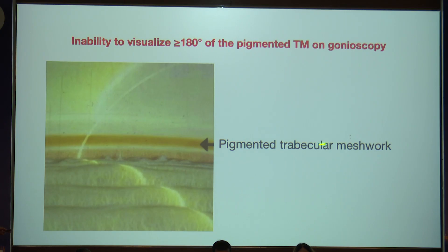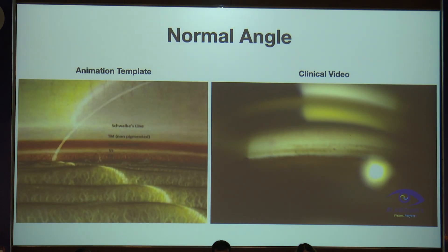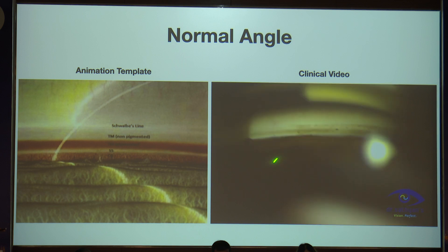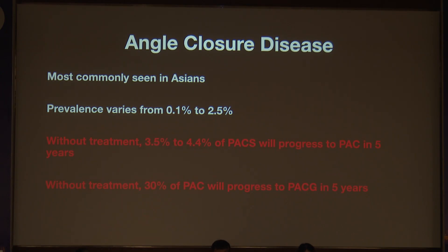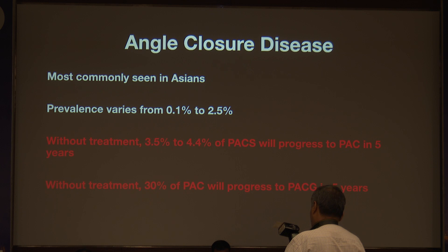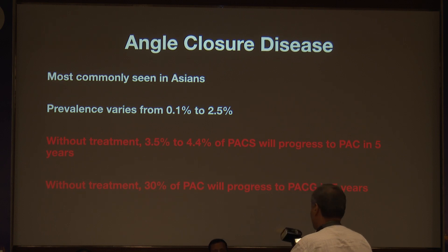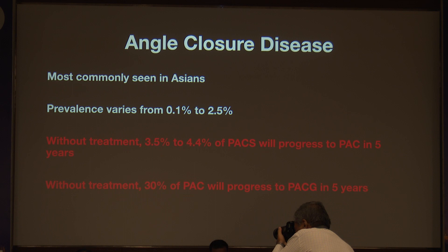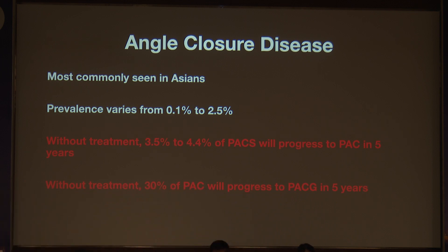On gonioscopy, identify the pigmented trabecular meshwork and grade your patient accordingly. Angle closure disease is more common and the lens has a role in it. Prevalence of angle closure disease is 0.1 to 2 percent. If you don't treat a primary angle closure suspect, 4 out of 100 people will progress to primary angle closure in 5 years. Then a primary angle closure will progress to primary angle closure glaucoma in 30 out of 100 if untreated.